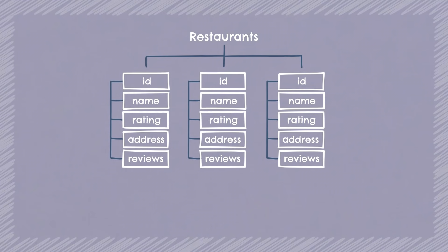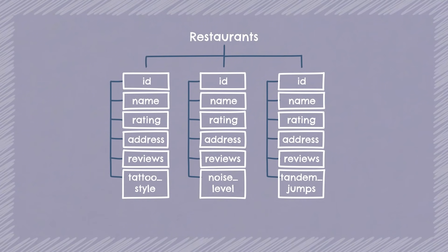It can also come in handy where you might want to store data that's similar but not exactly the same. For example, you could easily expand your restaurant app to include bars and tattoo parlors and skydiving lessons, and your database doesn't care that one object has a 'tandem jumps' field and another has a 'tattoo-style' field. You don't have to fight with your database to add these slightly different types of establishments.